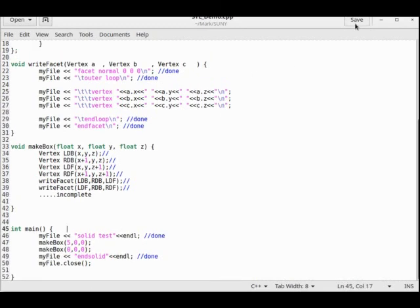Okay, so what I want you to do now is save it, compile it, and run it, and then view your STL file to see if you've successfully drawn two different boxes. And after that, move on.